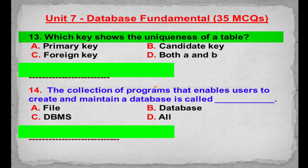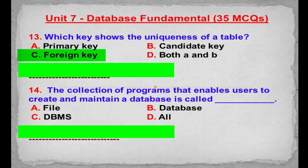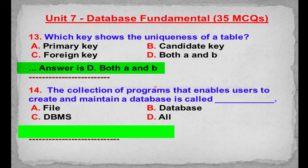MCQ number 13: Which key shows the uniqueness of a table? Option A: Primary key. Option B: Candidate key. Option C: Foreign key. Option D: Both A and B. Correct answer is Option D: Both A and B.